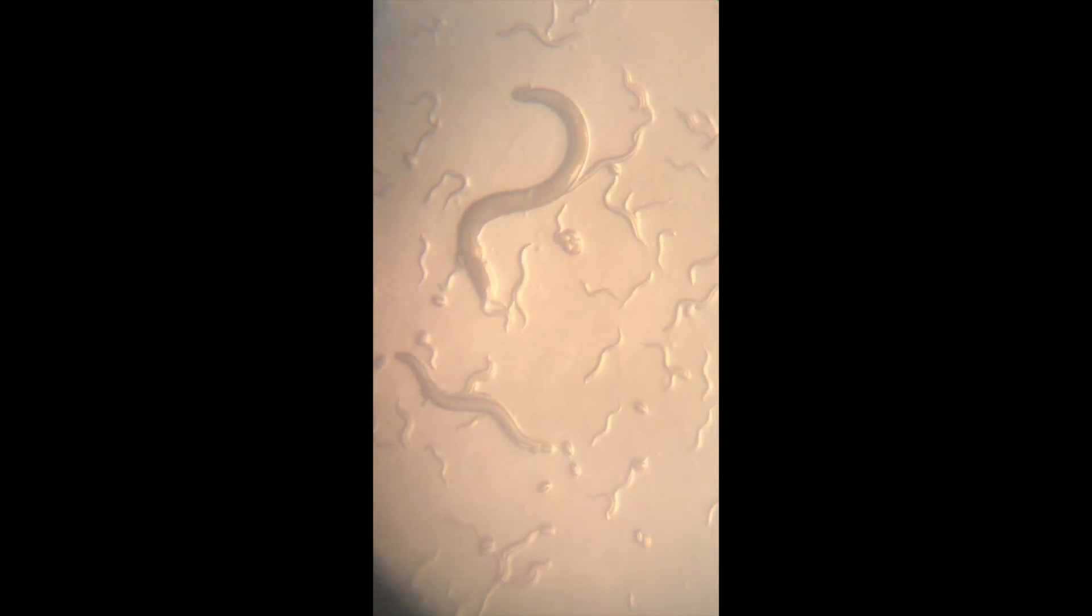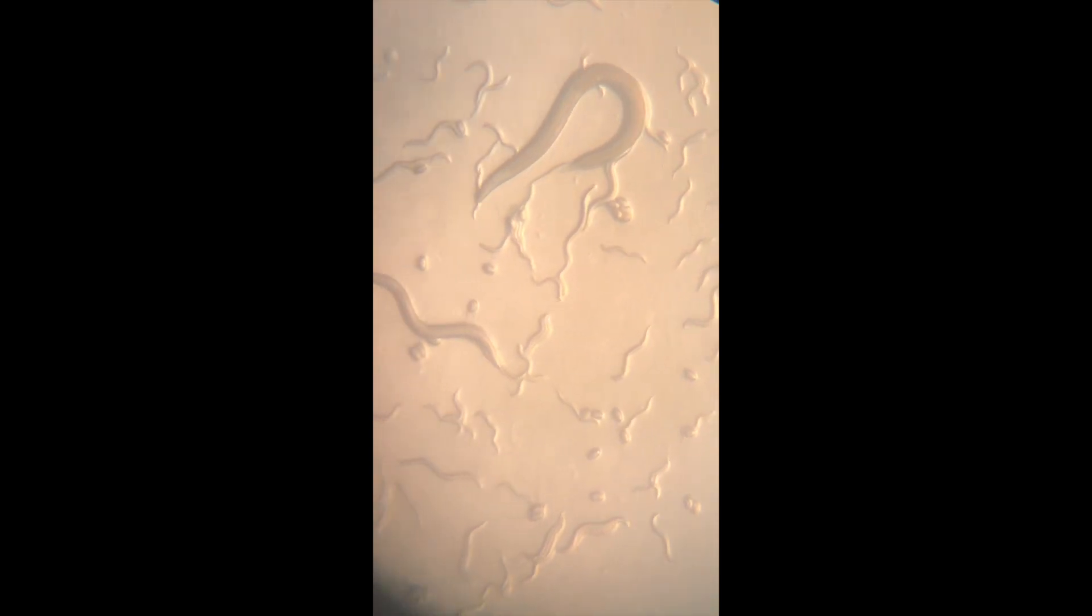RNAi is a biological process in which RNA molecules inhibit gene expression or translation initiated by double stranded RNA, or DSRNA. The technology is similar to a cell cop. It is intended to stop harmful proteins from being produced.